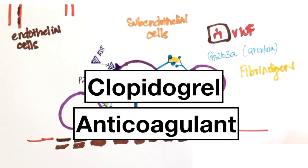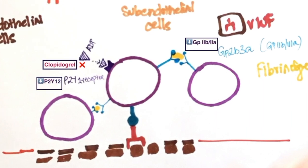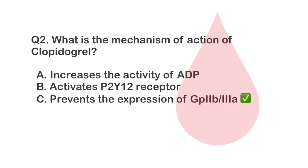Clopidogrel is an anticoagulant. It works by inhibiting the activity of ADP, hence decreases the expression of GP2B3A. In the absence of GP2B3A, platelets cannot bind to each other with the help of fibrinogen, hence clotting is interrupted.